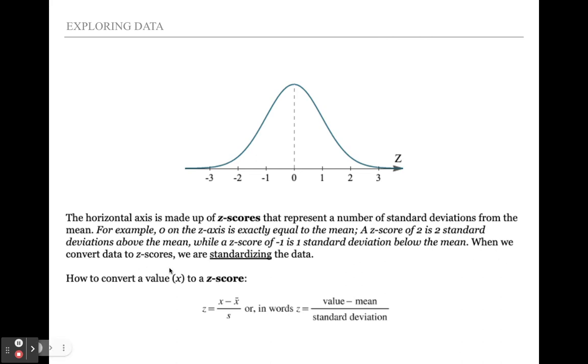When we convert data to z-scores, we are standardizing. Here's how you do it. You take the value, which is a specific individual score. You subtract the mean. So you find out how far is it from the mean, value minus mean. And then you divide by the standard deviation to find out how many standard deviations go into that difference. So value minus mean divided by standard deviation, that gives you a z-score. And that puts you somewhere along this scale.